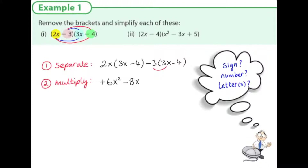Minus 3 multiplied by 3x: the sign is minus, 3 by 3 is 9, and the letter is x. Minus 3 by minus 4: minus multiplied by minus gives us a plus sign, and 3 fours are 12, so the answer to this part is plus 12. It's with the signs that mistakes will usually be made.